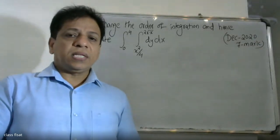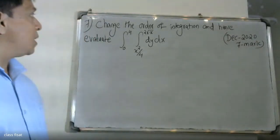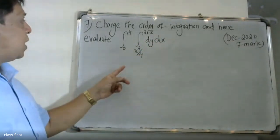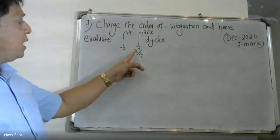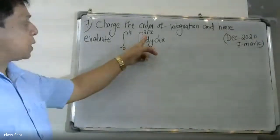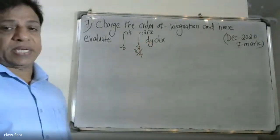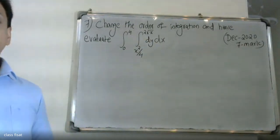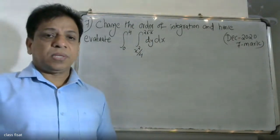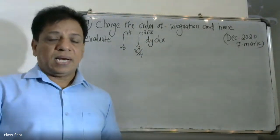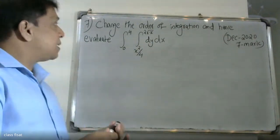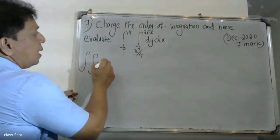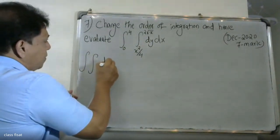Good morning, students. At the university questionnaire, change the order of integration. The problem evaluates the integral from 0 to 4, integral from x²/4 to 2√x, dy dx. We will work out this problem as a double integral with dx dy.